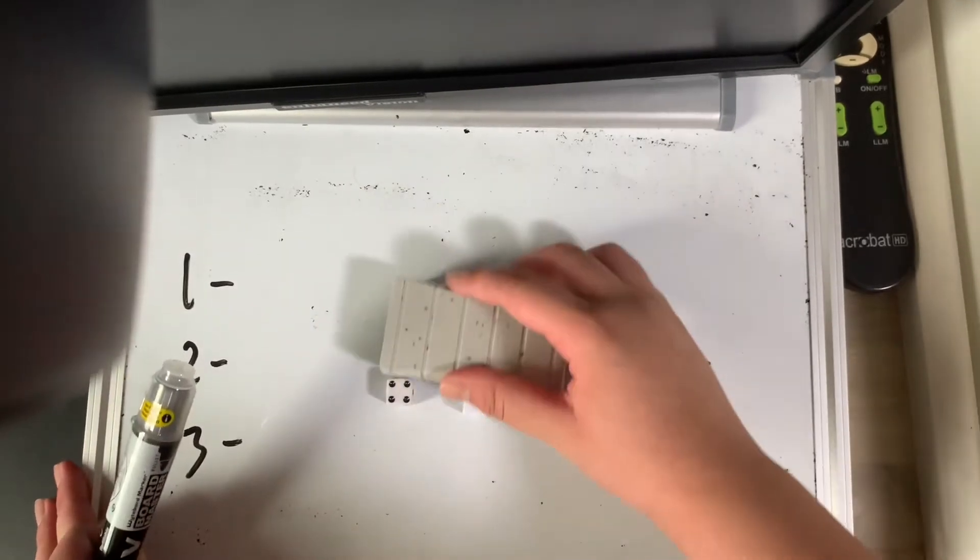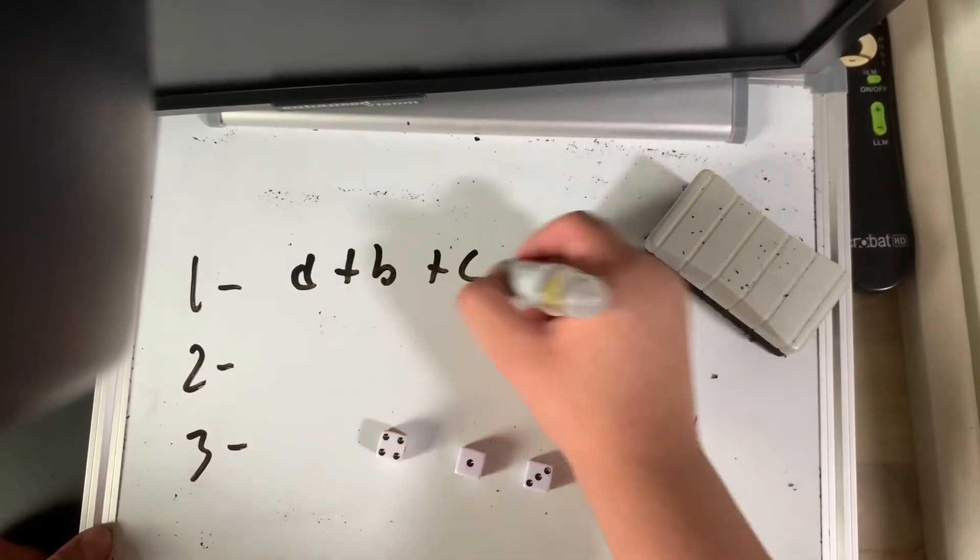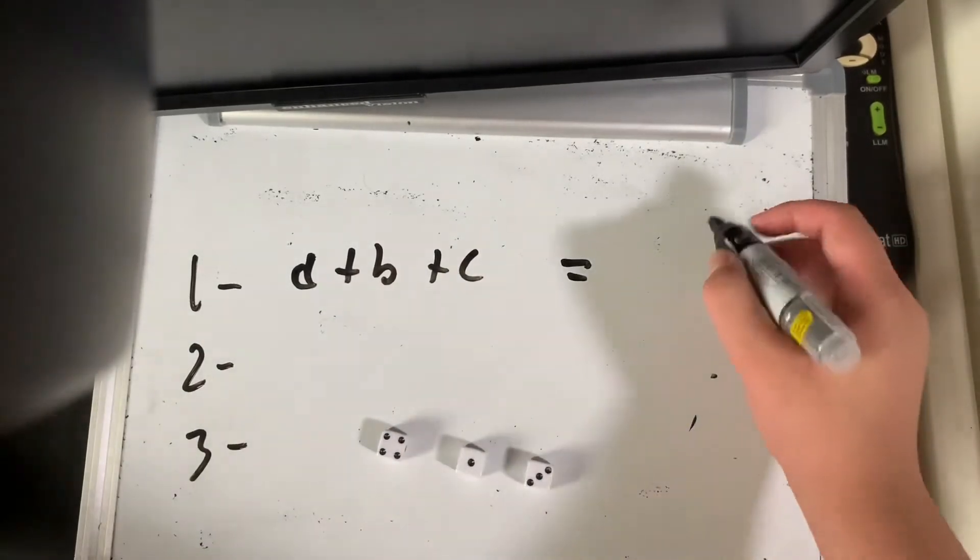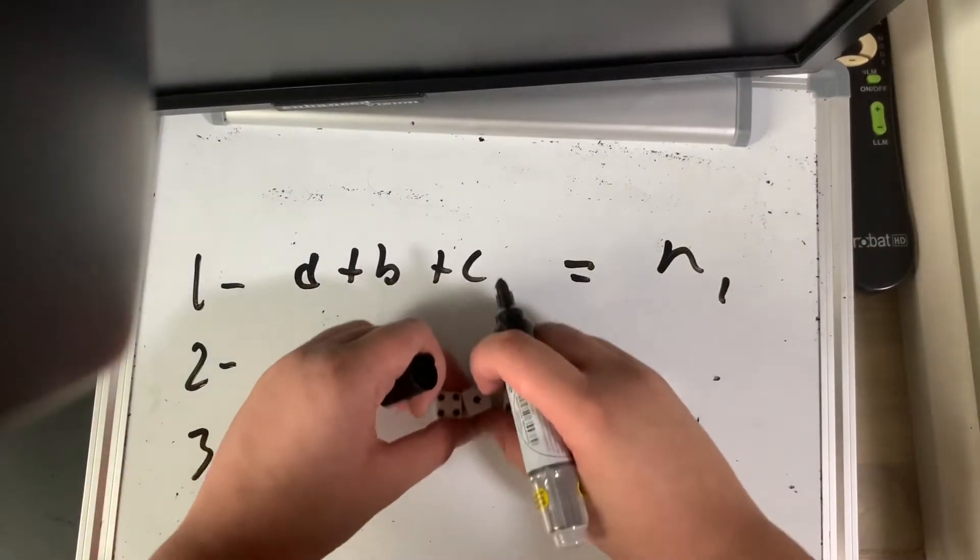Summing up all the numbers, put that in an equation, that's going to be A plus B plus C. Then this one would equal, I'll call this N1 for number 1, the first number.